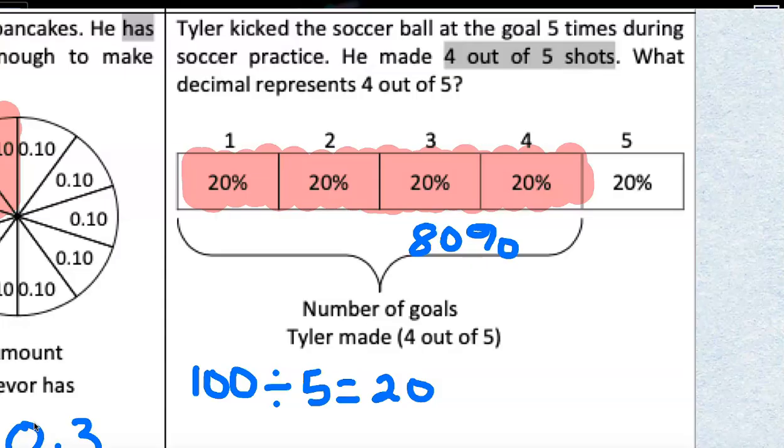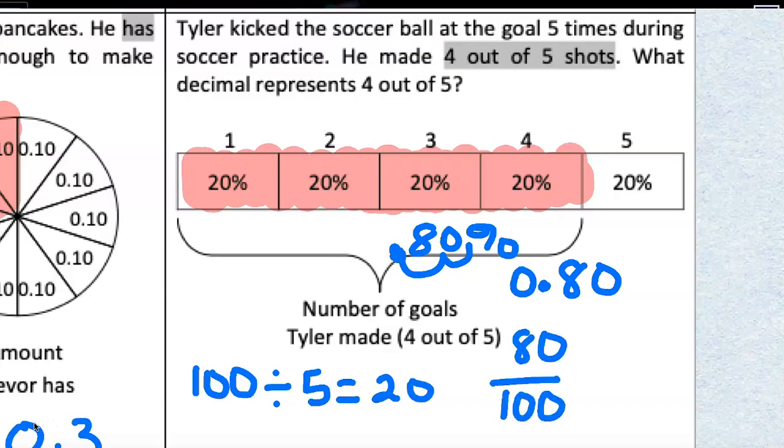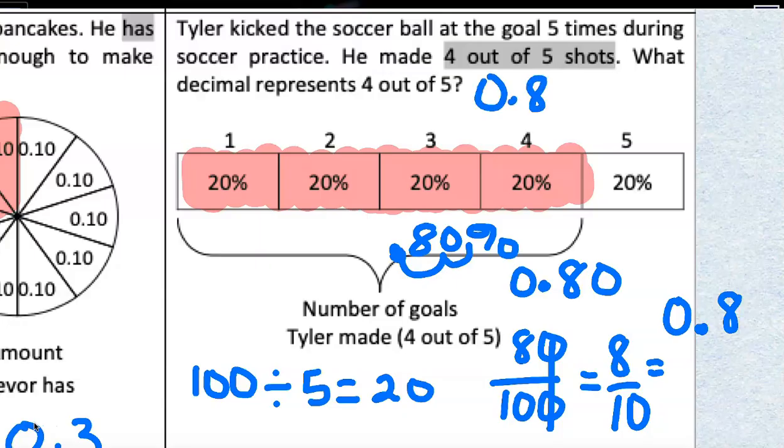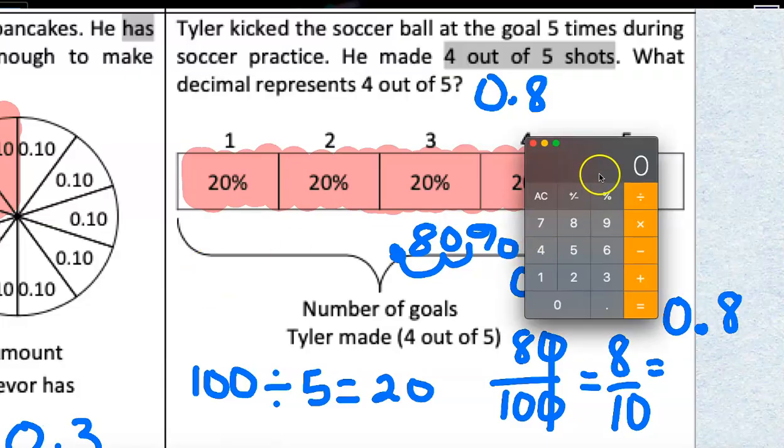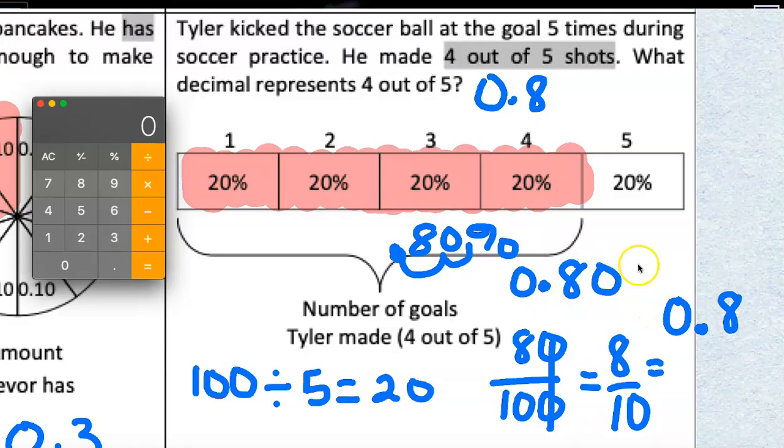There's two ways we could do that. We could start by just moving the decimal point over, and we'd be at 0.8 or 0.80. Another way we could think about it would be 80 out of 100. An 80 out of 100 is the same as 8 tenths. And the way we write 8 tenths as a decimal would be we have 0 in the one spot and an 8 in the tenths spot. So, what decimal represents 4 out of 5? 0.8. A quicker way we could have done that, we could have grabbed the calculator or we could have set up a division problem. And we could have taken 4 out of 5. So, 4 divided by 5 equals 0.8.